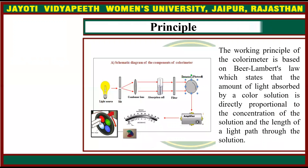The working principle of a colorimeter is based on Beer-Lambert's Law, which states that the amount of light absorbed by a colored solution is directly proportional to the concentration of the solution and the length of the light path through the solution.